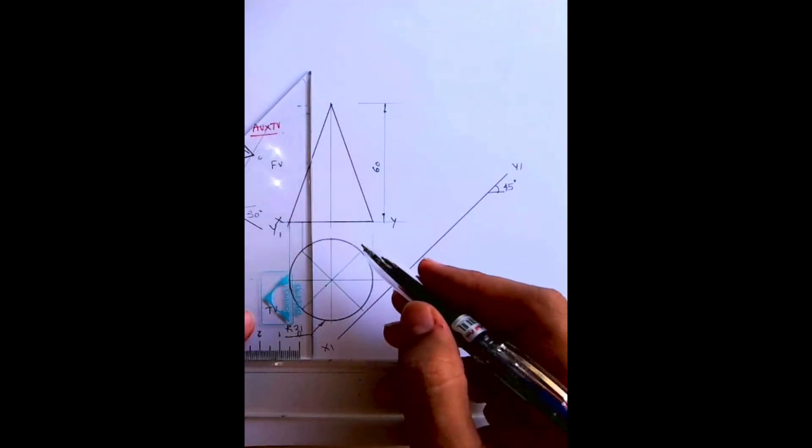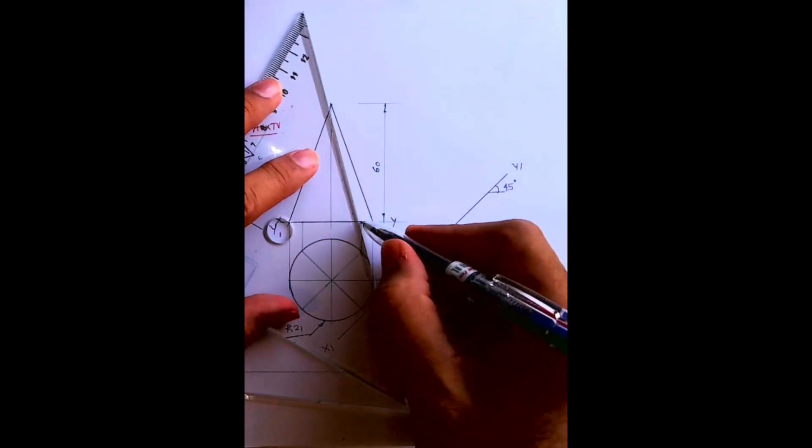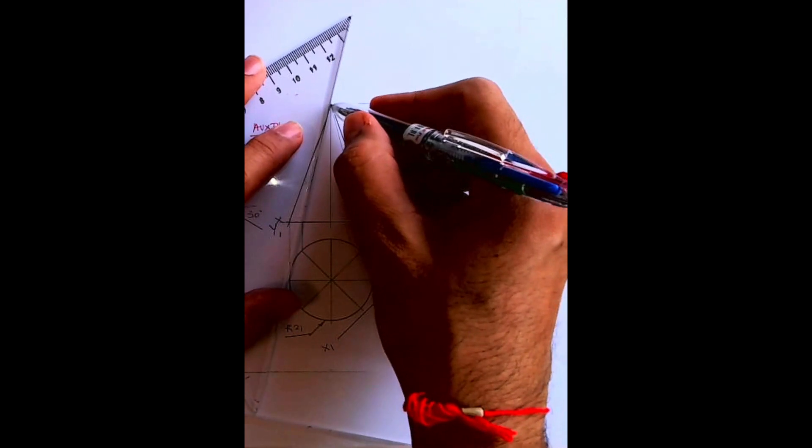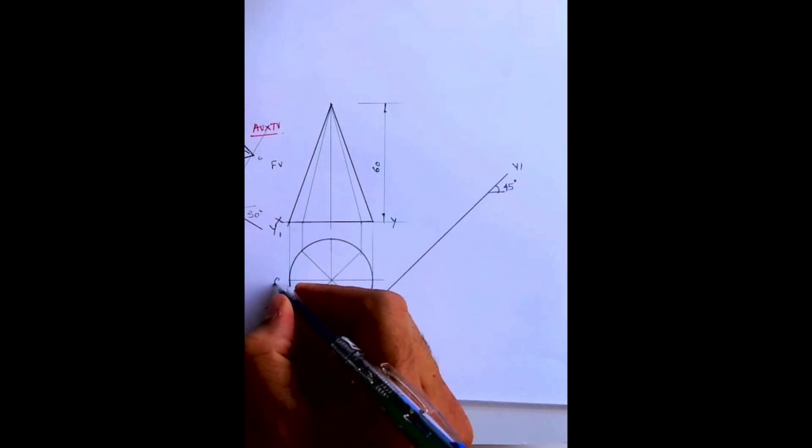So we can divide into eight parts or 12 parts. If I'm dividing into eight parts then I will draw a front view and top view like this. I will take these points up and mark generator.